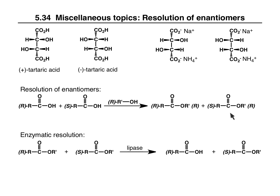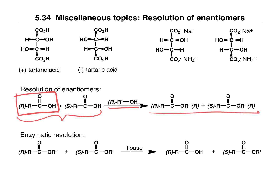Now, they're still both esters so they're going to have similar properties, but these might be different enough that you could separate them by chromatography. If your goal is to obtain the R carboxylic acid, you have to take your enantiomeric mixture, carry out a reaction, separate the two diastereomers to isolate the RR ester, and then carry out another reaction to convert it back to the acid you were trying to obtain. So it's a multi-step process to be able to separate enantiomers.